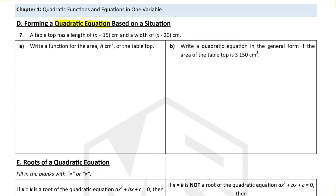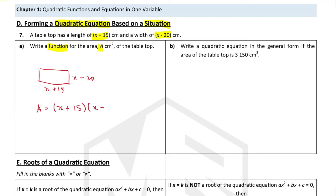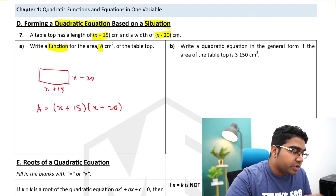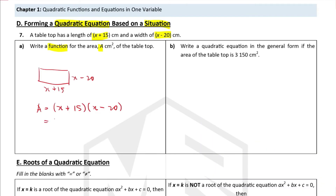Let's look at how to form a quadratic equation based on a situation. A tabletop has a length of (x plus 15) and a width of (x minus 20). The area equals length times width, so we have (x plus 15) multiplied by (x minus 20). Expanding this gives x squared minus 5x minus 300. This is the function for the area of the tabletop.